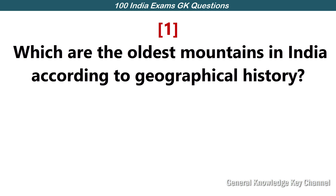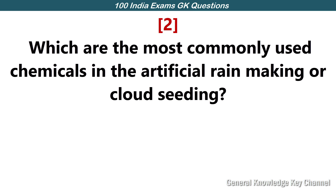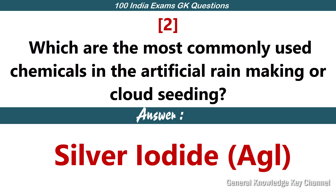Which are the oldest mountains in India according to geographical history? Aravallis. Which are the most commonly used chemicals in artificial rain making or cloud seeding? Silver Iodide.